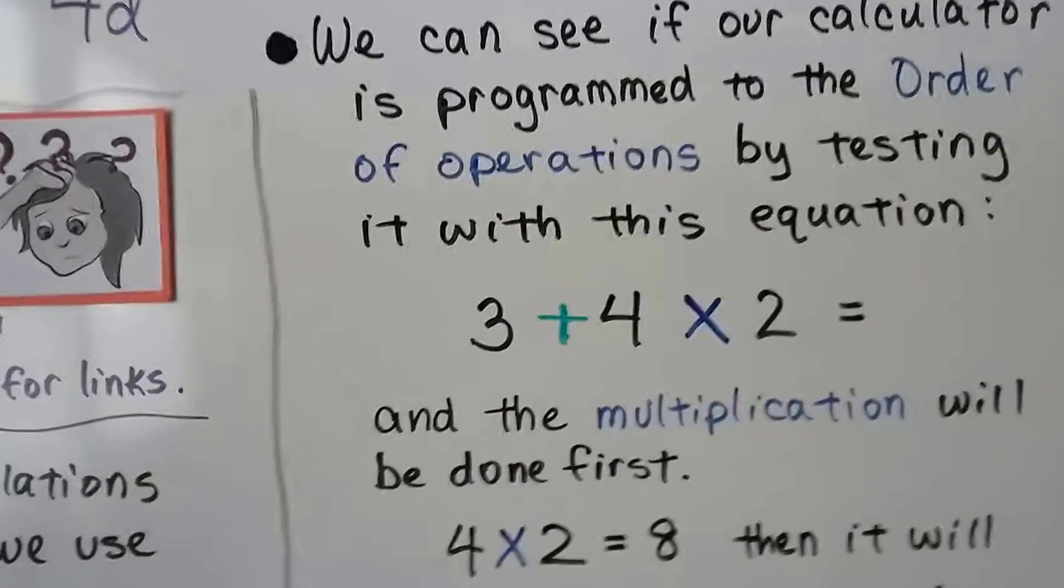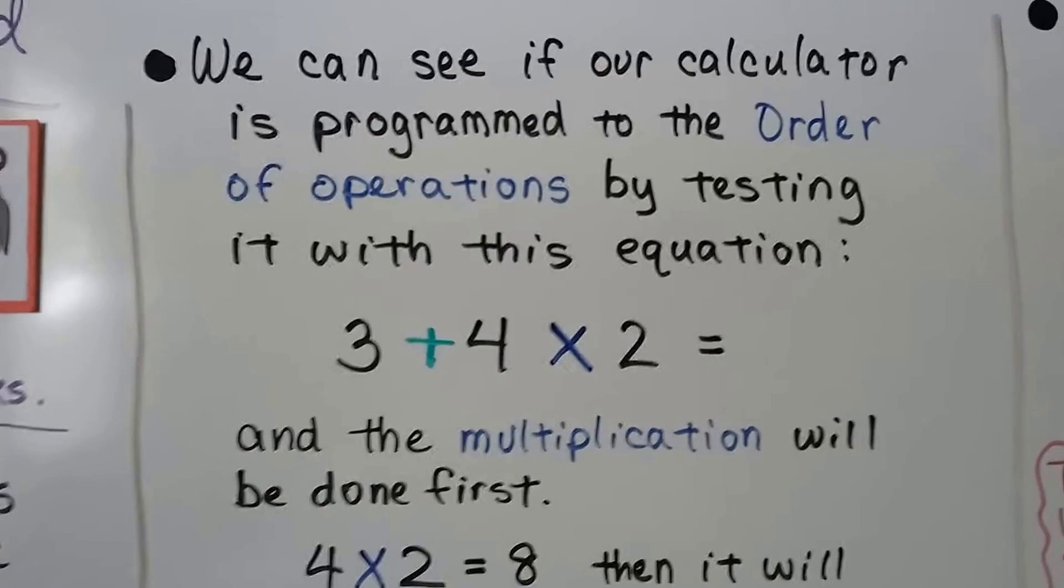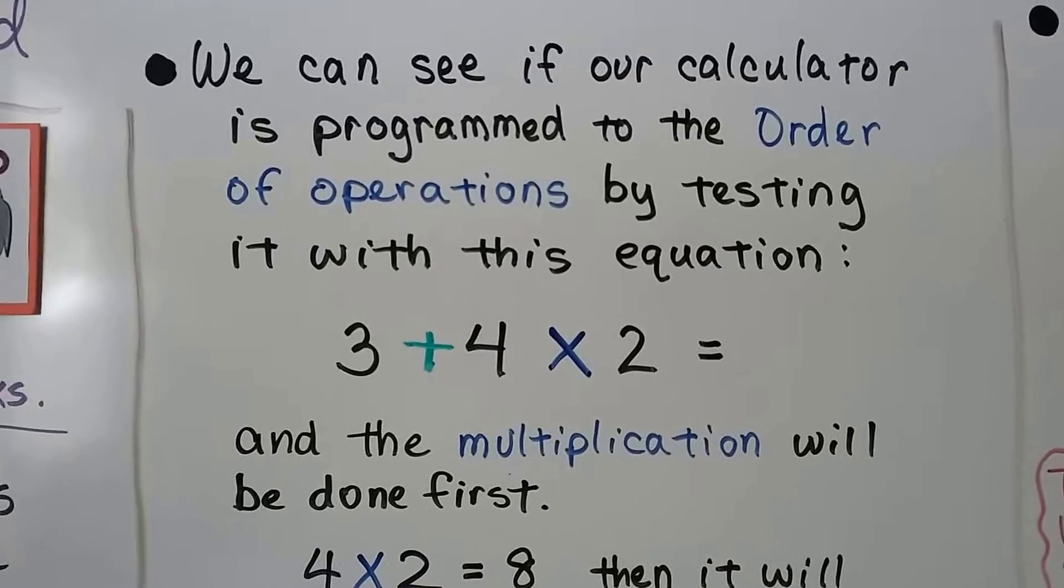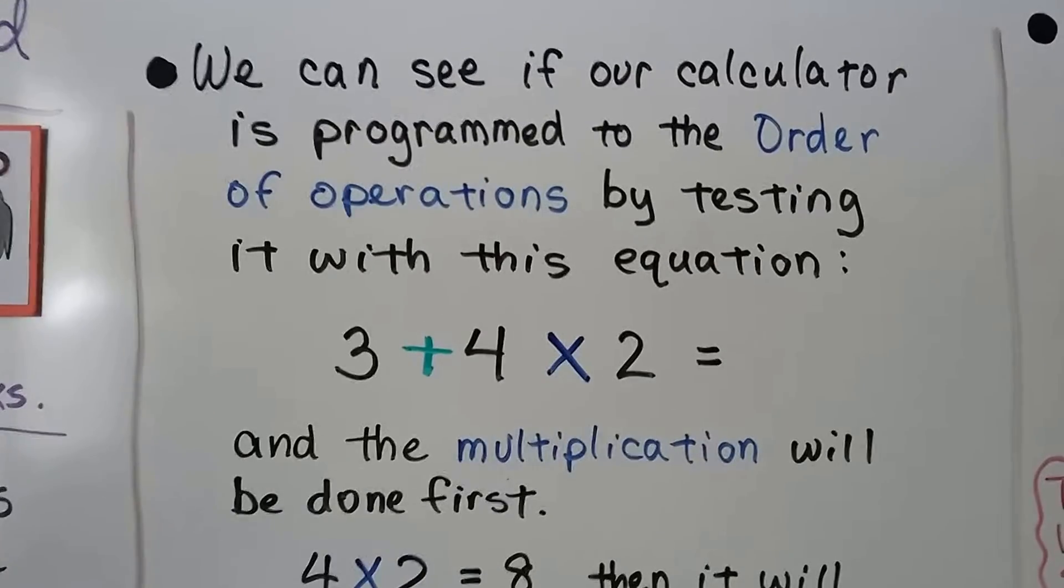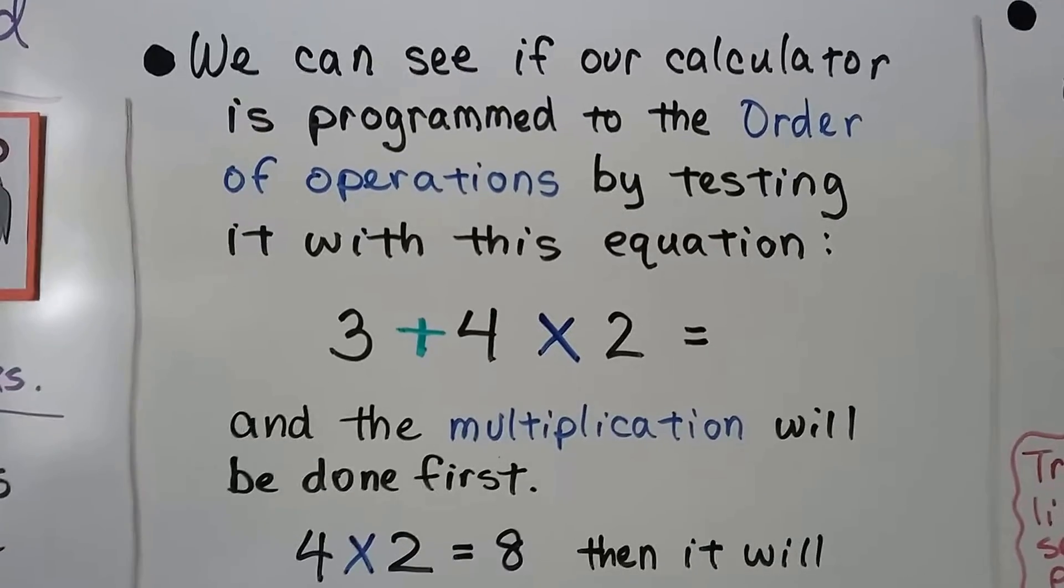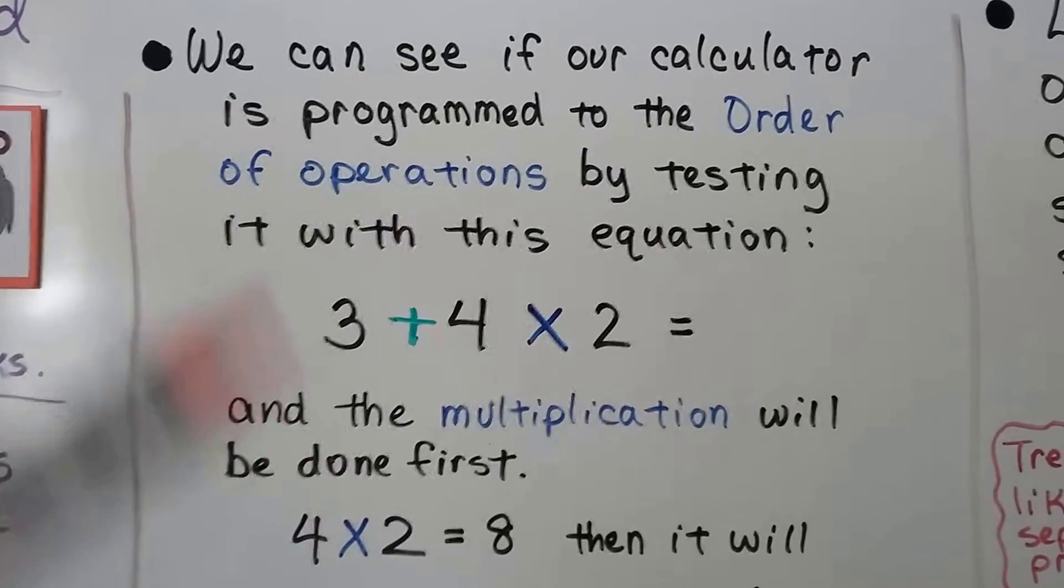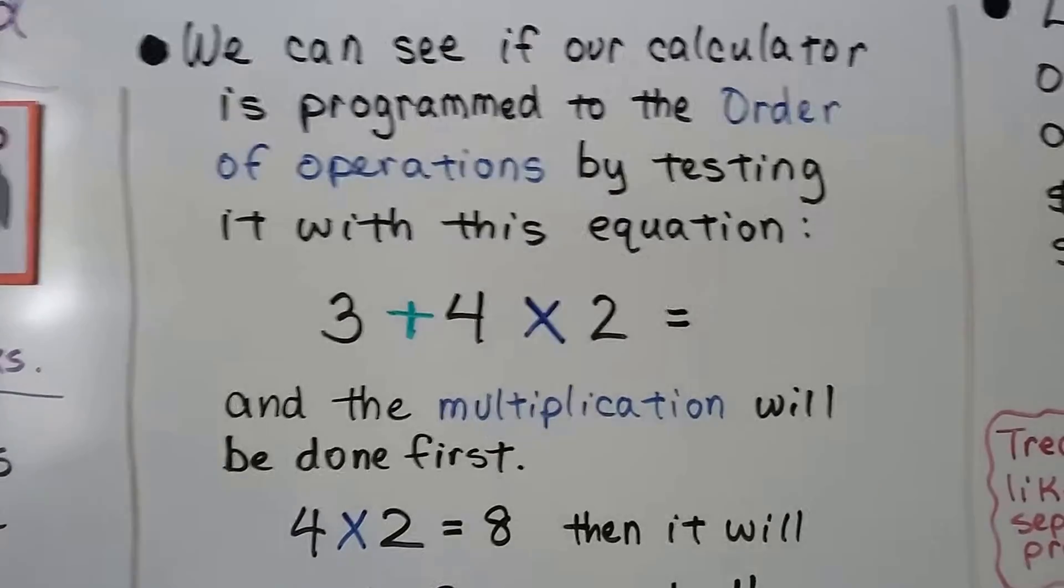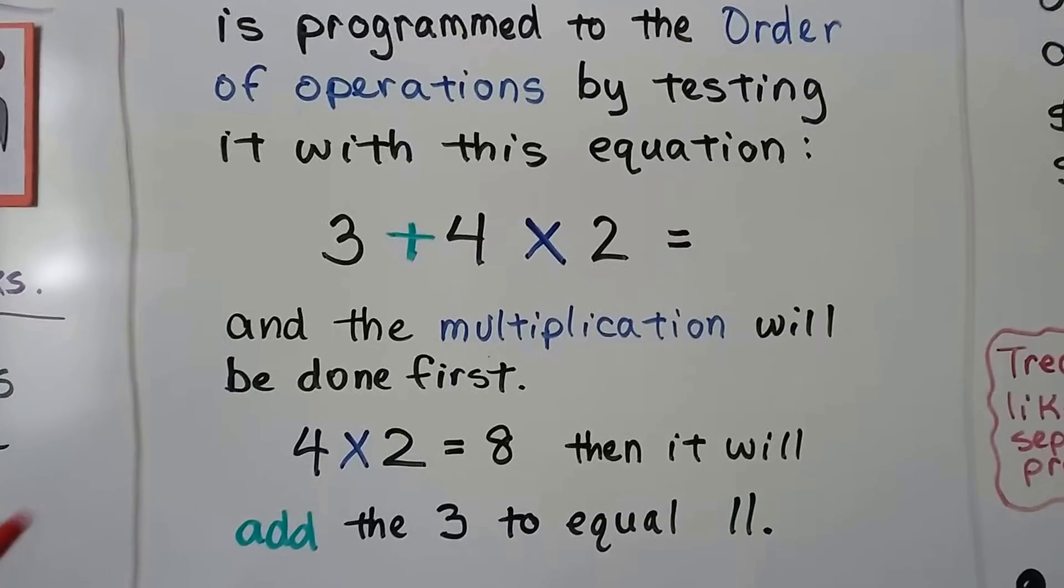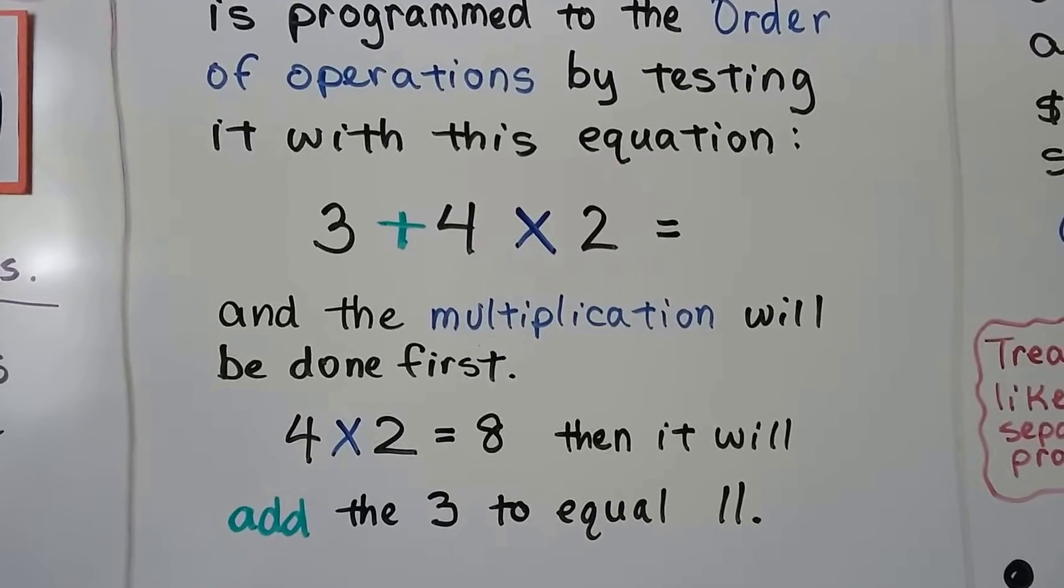And we can see if our calculator is programmed to the order of operations by testing it with this equation. We put in 3 plus 4 times 2 equals. And the multiplication will be done first. Even though we put it in with the addition first, if it's programmed to the order of operations, it's going to give us the correct answer. It's going to do the 4 times 2 equals 8 and then it will add the 3 to equal 11.